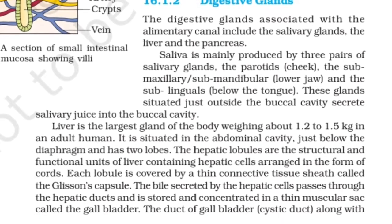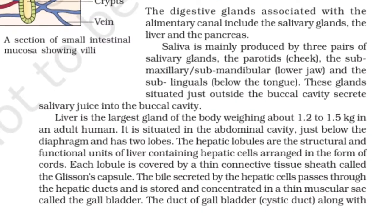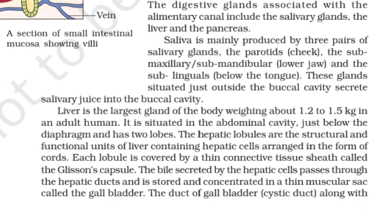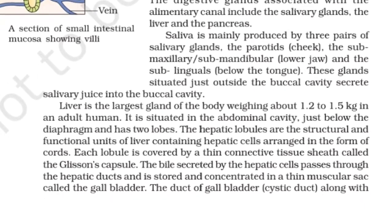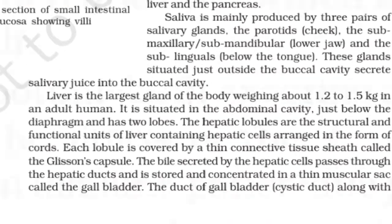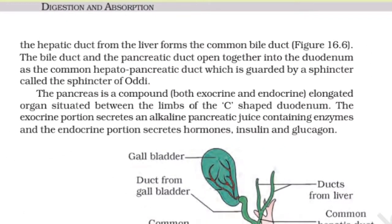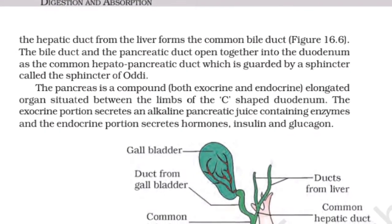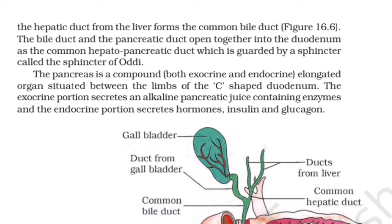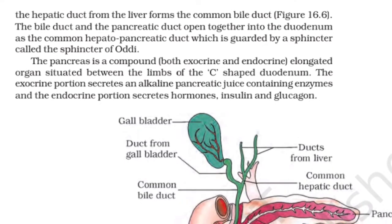The bile secreted by hepatic cells passes through the hepatic duct and is stored and concentrated in a thin muscular sac called the gallbladder. The duct of the gallbladder along with the hepatic duct from the liver forms the common bile duct. The bile duct and the pancreatic duct open together into the duodenum as the common hepato-pancreatic duct.